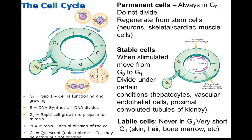Then we have the G2 phase where we have rapid cell growth preparing to divide. And then we have the M phase, which is where the cell actually divides. And then ultimately we're back to the G0 phase, or the quiet phase.